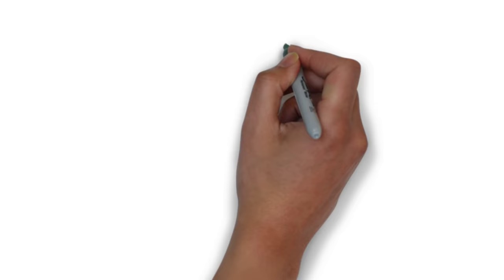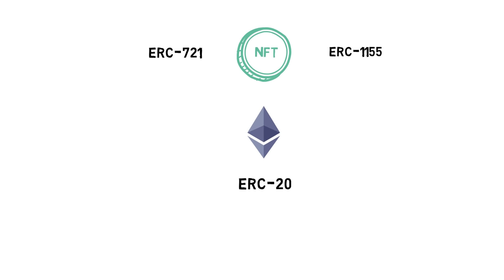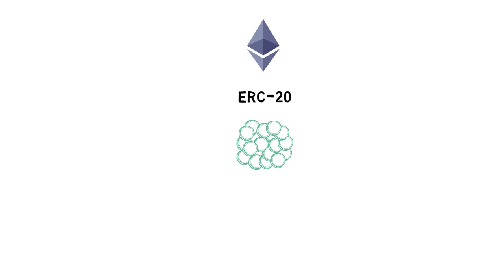Although NFTs can be implemented on any blockchain that supports smart contract programming, the most noticeable examples are ERC721 and ERC1155 standards on Ethereum. Before we get into the NFT standards, let's quickly recap what ERC20 is, as it will be useful for comparison. ERC20 is a well-known standard for creating tokens on the Ethereum blockchain. Some examples are stablecoins such as USDT or DAI, or DeFi tokens such as LAND, WIFI, SNX, and UNI.